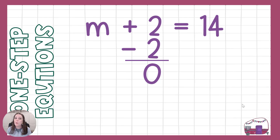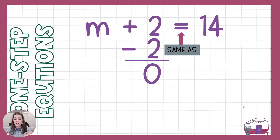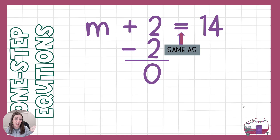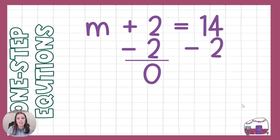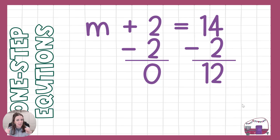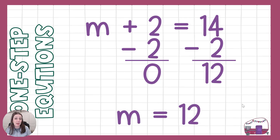But now there's another problem — what does that equal sign mean? It means equal, the same as, balanced. If this is a scale and I take 2 away from this side, my scale tips. It's not balanced anymore. So if I took 2 away from this side, I need to take 2 away from the other side too, and then it'll be the same. I've kept everything equal and balanced. Now all I have left is n equals 12. There's my answer. My variable has been isolated — it's all by itself now.